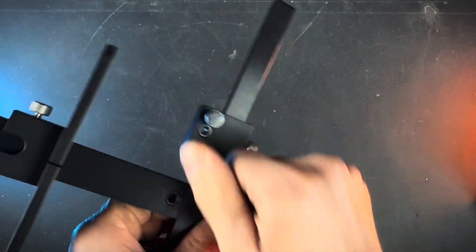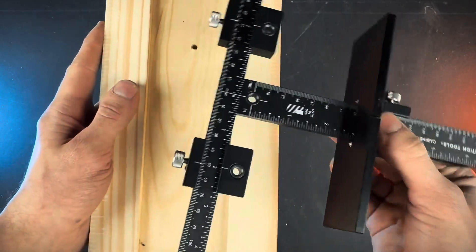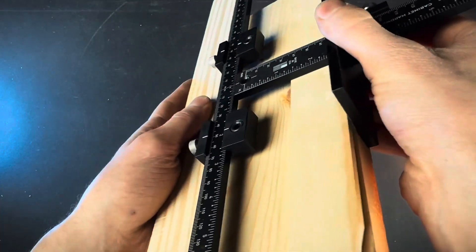And then these feet here just screw into the back like this. That's for if you have a shaker style drawer like this where the edges are raised. You can easily just adjust the legs on here and then set it on so it's perfectly flat.